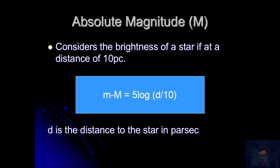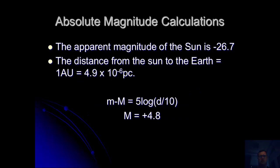This is the formula which is used at some stage. It's probably the only formula we can use for these kind of calculations. So let's give an example. The apparent magnitude of the sun is minus 26.7. The distance from the sun to the earth is 4.9 times 10 to the minus 6 parsecs.